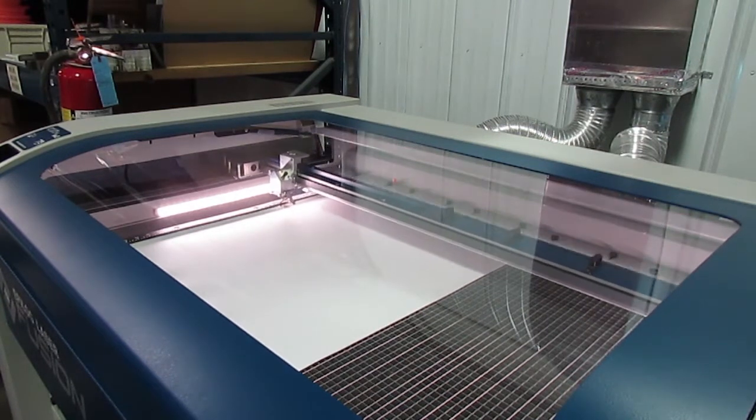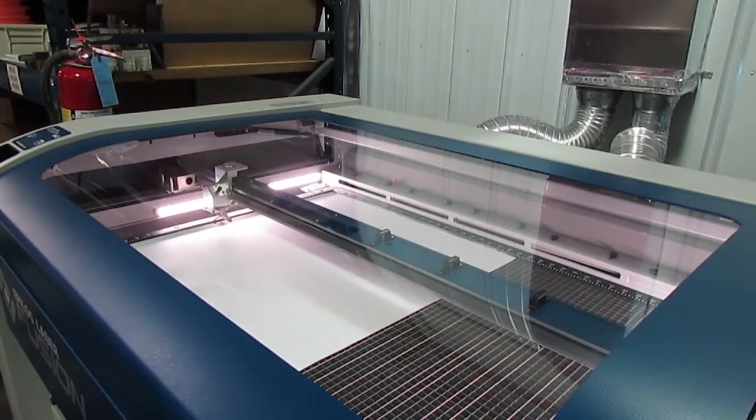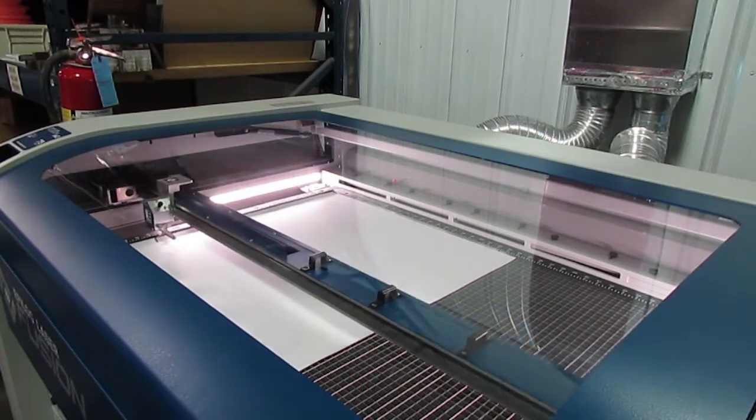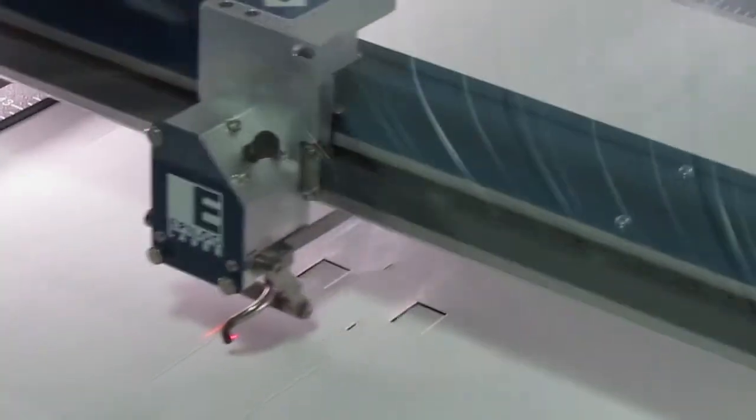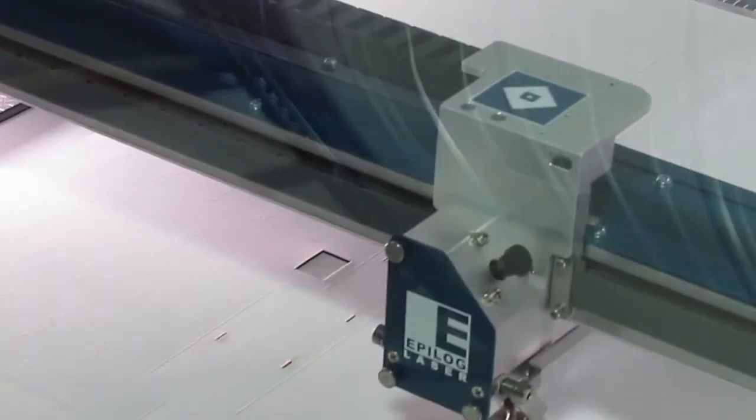This model has a nice big 40 inch by 28 inch work area with servo motors to move the laser head in a smooth, fast motion. The cutting is done by an infrared beam, which you can't see. The visible red dot is an alignment aid.